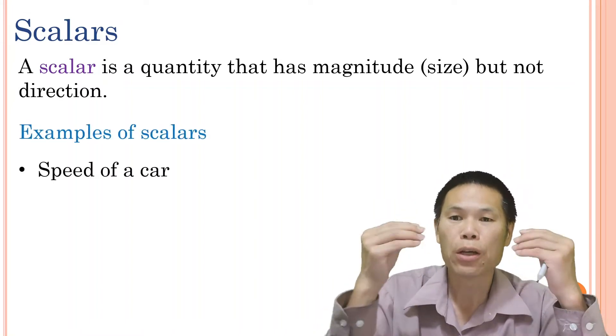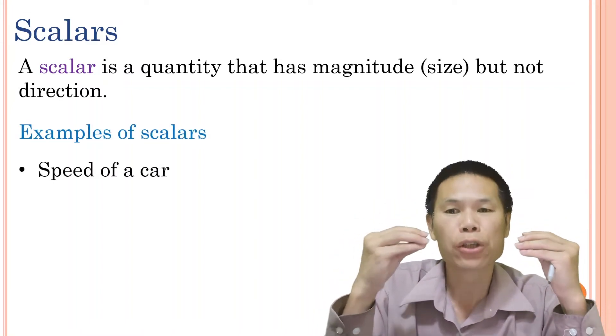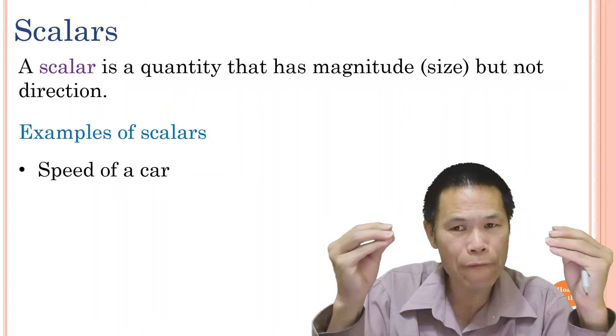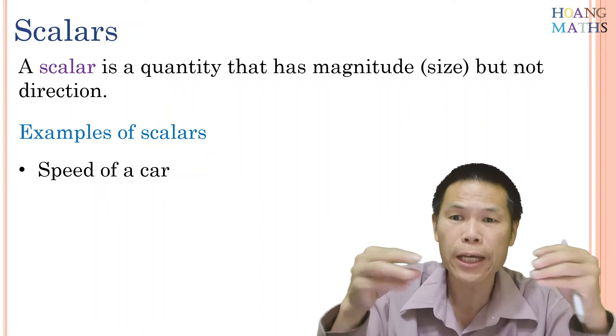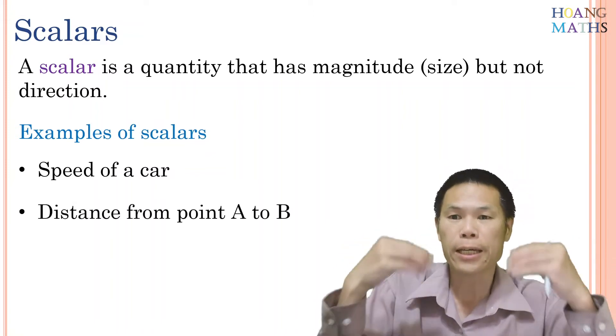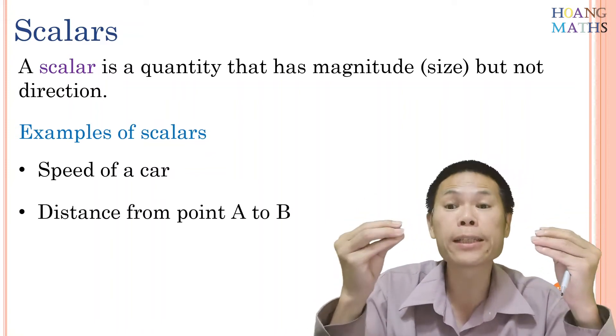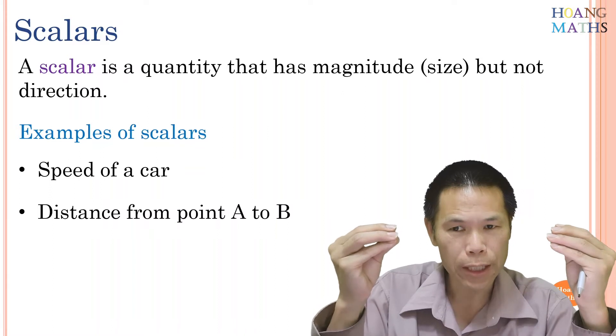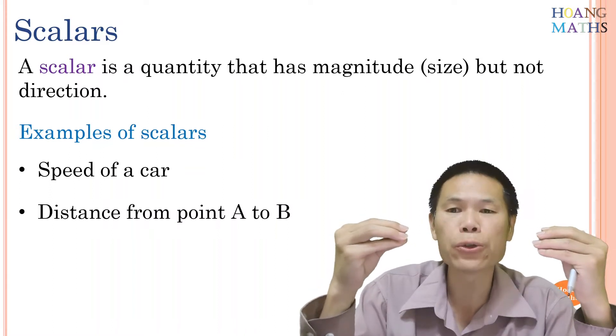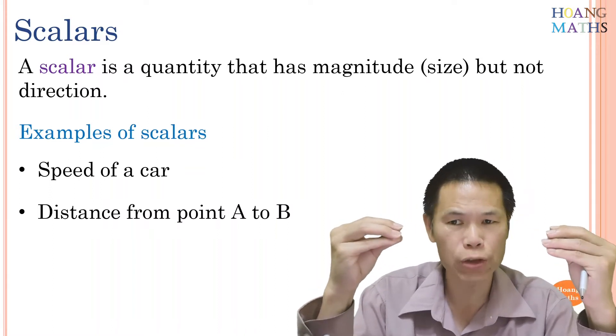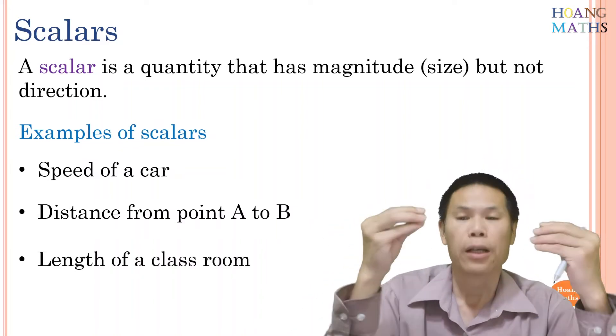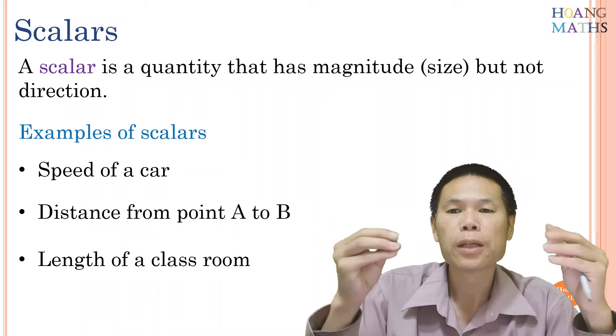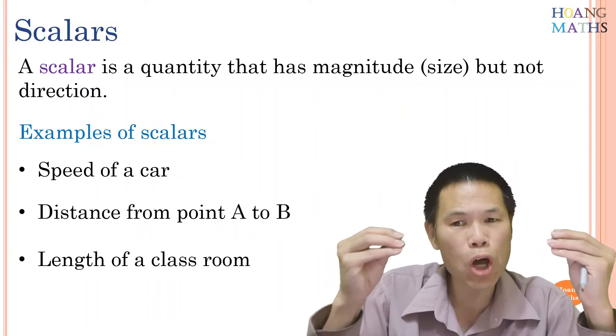For example, speed of a car tells you how fast the car is traveling but doesn't tell you which direction it is heading to. The next one is the distance from point A to point B - the distance only tells you how far it is from point A to B and doesn't tell you the bearing. The length of a classroom, again, only tells you the size of the classroom.